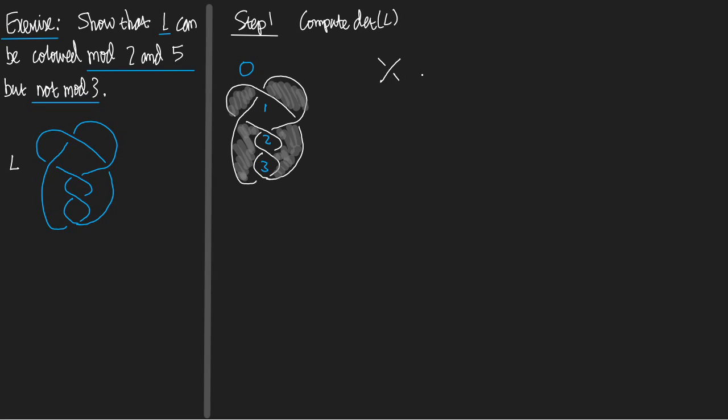Next I compute the signs of all the crossings according to the chessboarding. And remember that the rule is this one. If at the crossing we have what's on the left, then the sign is plus 1. This is where the over strand is clockwise from the shaded part. And if it's what's on the right, then it's minus 1. This is where the over strand is anti-clockwise from the shaded part.